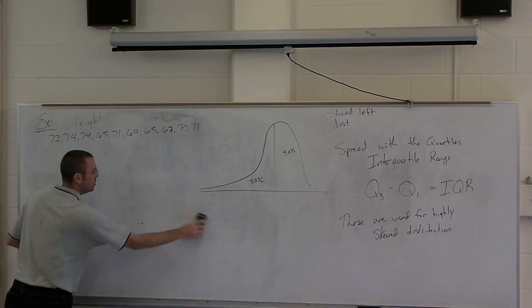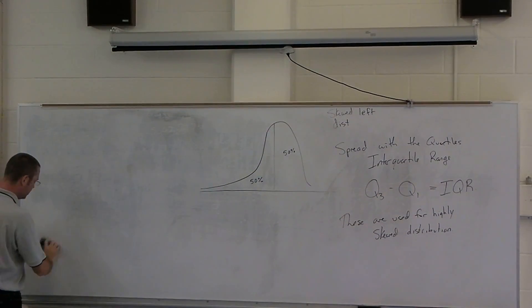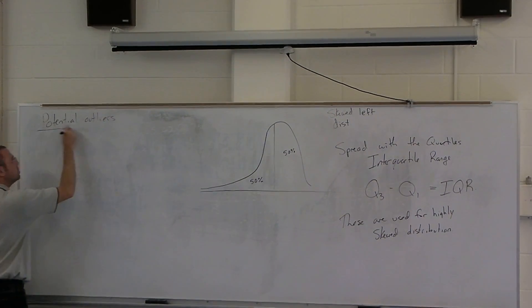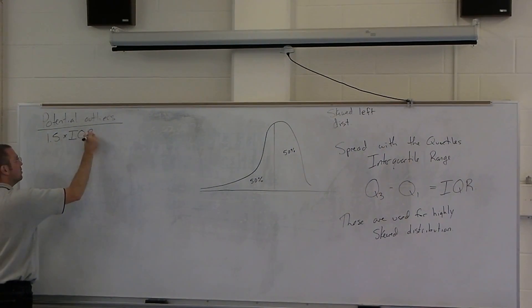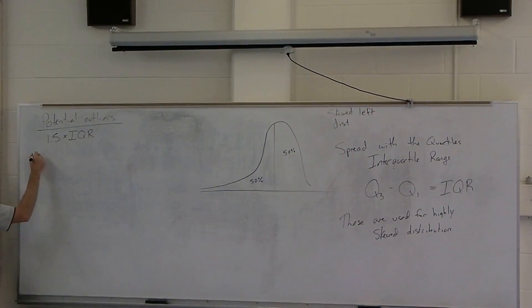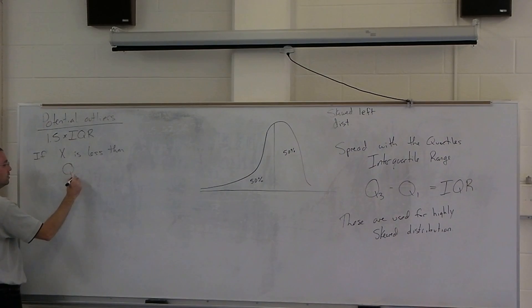And for skewed distributions, it's often not easy to identify what an outlier is, but potential outliers for skewed distributions, what you're going to look at is, you're going to look at 1.5 times the IQR, and then a potential outlier is if x is less than the first quartile minus this value, or x is greater than Q3 plus this same 1.5 times the IQR.